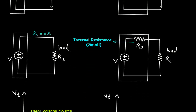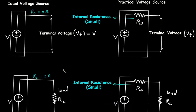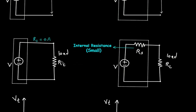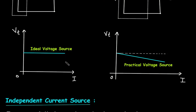Here the terminal voltage is equal to the source voltage. This is an ideal independent voltage source with load RL, and this is a practical independent voltage source with load RL. This is a graph plotted between voltage Vt (terminal voltage) and current. As the current increases, the ideal voltage remains the same — it does not change.